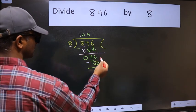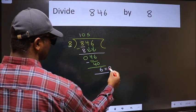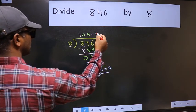No more numbers to bring it down, so we stop here. This is our remainder and this is our quotient.